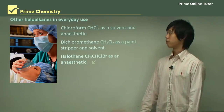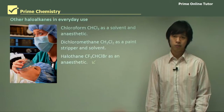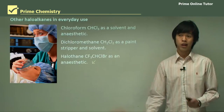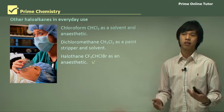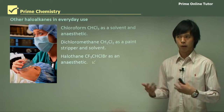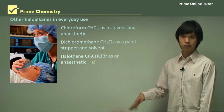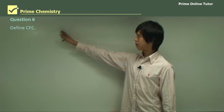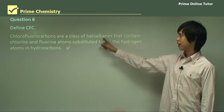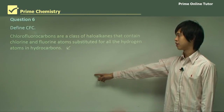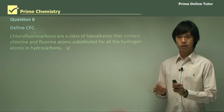In this lesson we've talked about what CFCs are, why we use them, and what damage they're causing to the environment. We've also spoken about what halons are and why we replaced CFCs with other chemicals, and what the alternatives are for refrigeration, aerosols, and similar applications. Question six: define CFC. CFCs are chlorofluorocarbons — a class of haloalkanes that contain chlorine and fluorine atoms replacing all of the hydrogen in the hydrocarbon. There are no hydrogen atoms at all, just carbon, fluorine, and chlorine.